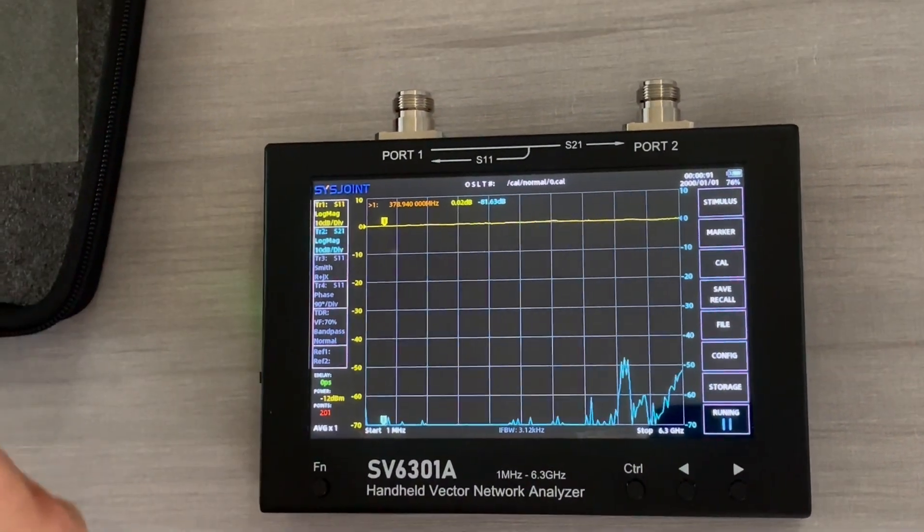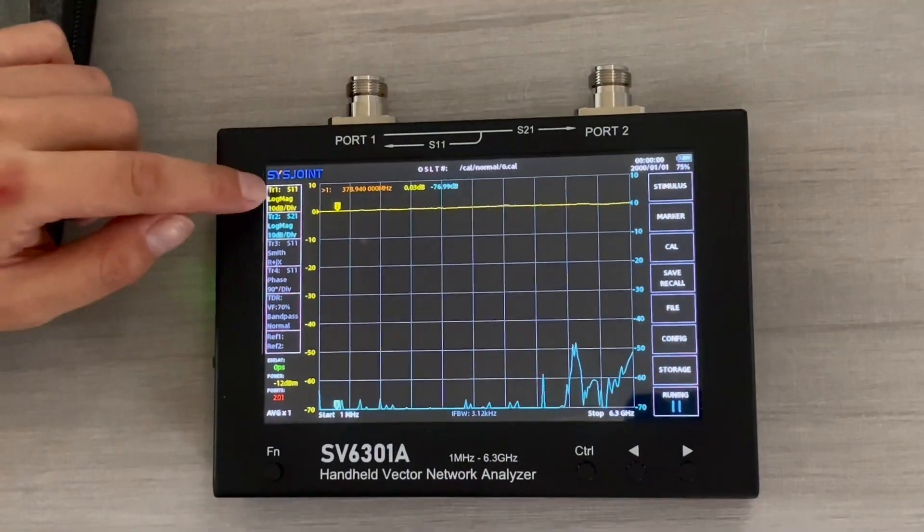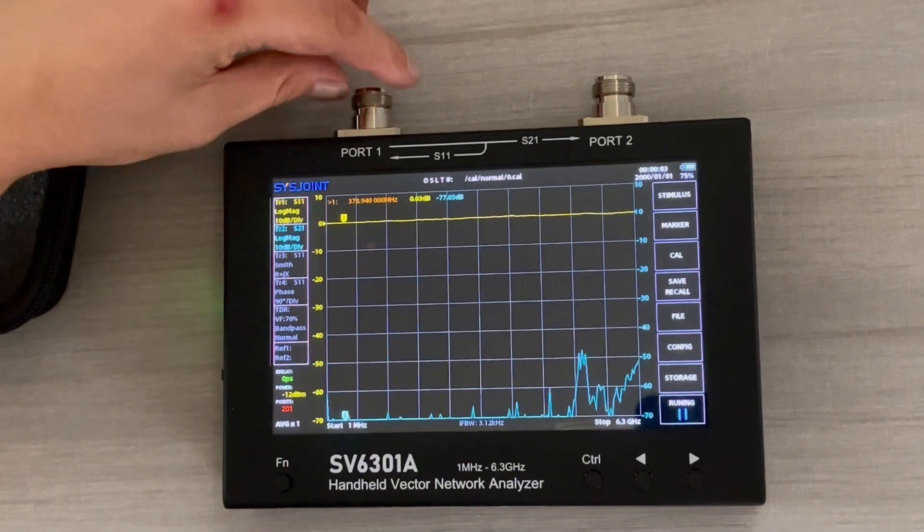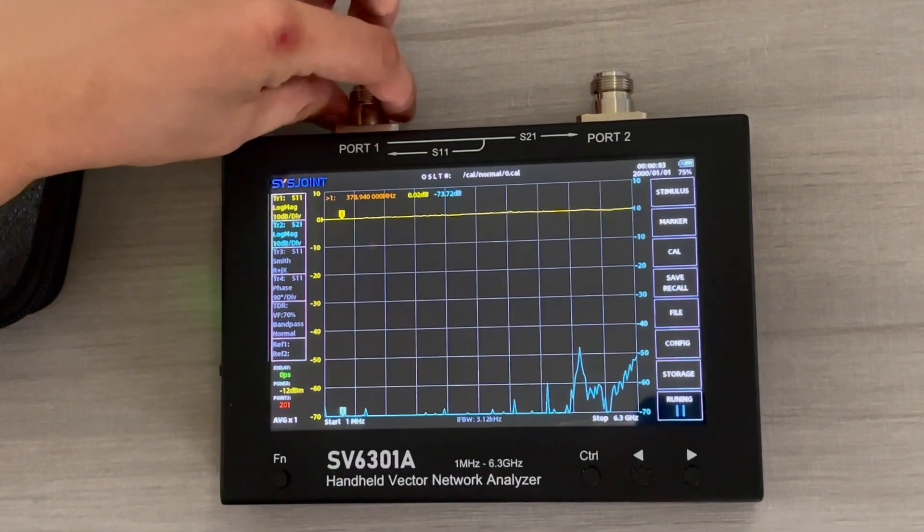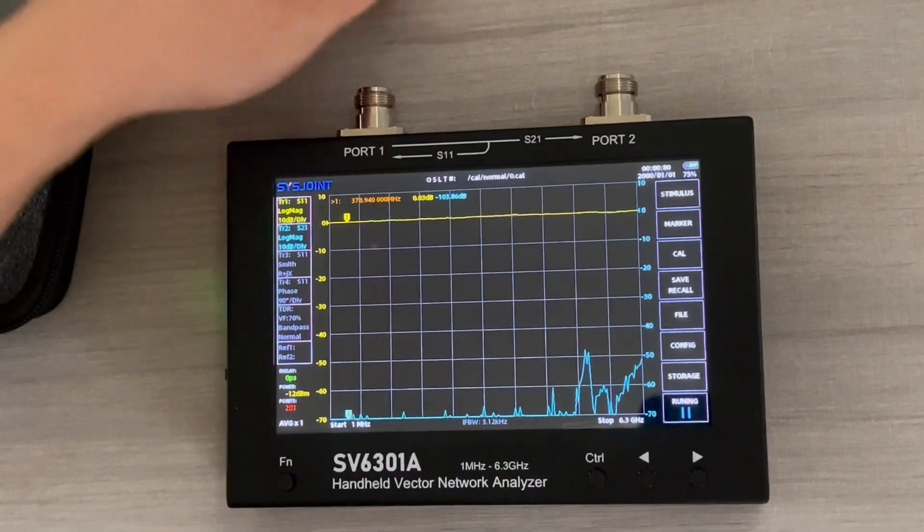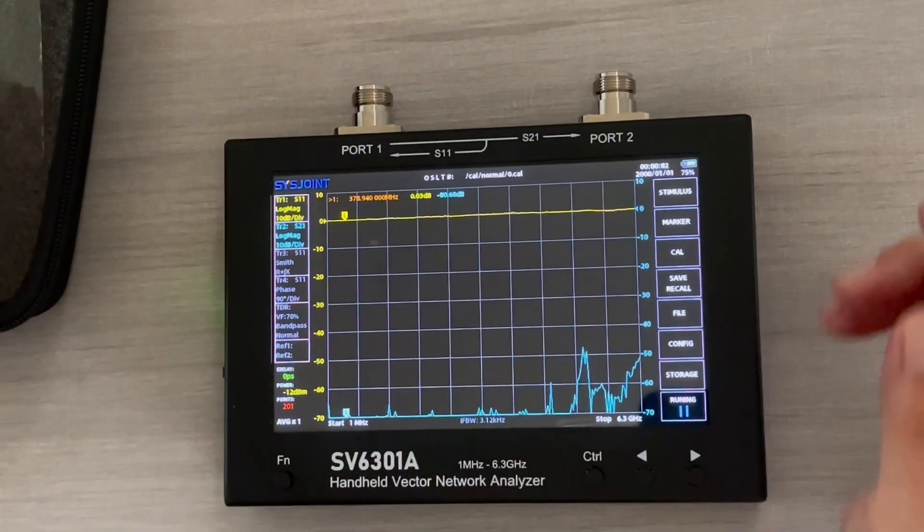I also want to explain a little bit about S11, S21, and logmeg. S11 means you send out a signal from port 1, and then the signal being reflected and you receive from the same port 1. S21 will be also from port 1, but you receive from port 2 and you measure the difference.